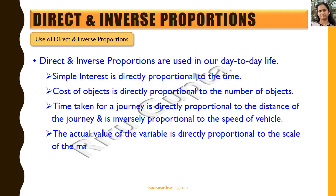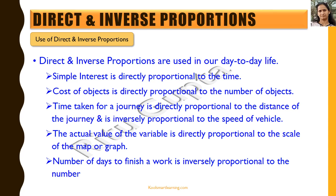The actual value of a variable is directly proportional to the scale used on a map or graph. For example, if the scale is 1 centimeter represents 1 kilometer, and the distance between two places is shown as 5 centimeters on the map, the actual distance would be 5 kilometers. The number of days to finish a work is inversely proportional to the number of workers — if one worker finishes a task in one day, five workers would finish the same task in one-fifth of a day.